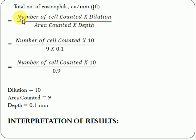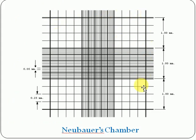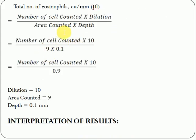The formula is: Number of cells counted × Dilution ÷ (Area counted × Depth). The number of cells counted is what you observed under the microscope. The dilution in this case is 10. The area counted — the entire nine-square area — is 9 mm². The depth of the Neubauer chamber is 0.1 mm, which is the space between the coverslip and the chamber.